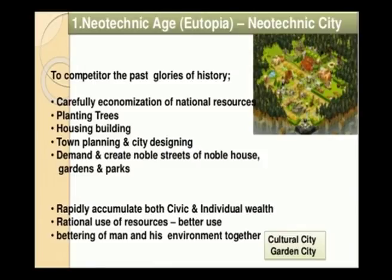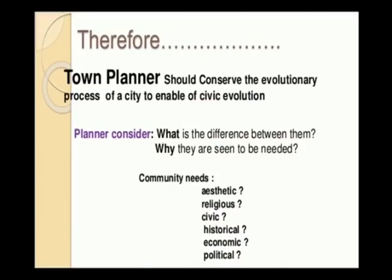The neotechnic city represents the glorious part of history — careful economization of natural resources, planting trees, housing buildings, town planning and city designing, demand and creation of noble streets, gardens and parks, rational use of resources and bettering of man and his environment together. In this stage, you have the growth of a cultural city and a garden city, contrasting with the previous industrial era of crowded, slum and pseudo cities. The town planners should conserve the evolutionary process of a city to enable civic evolution.